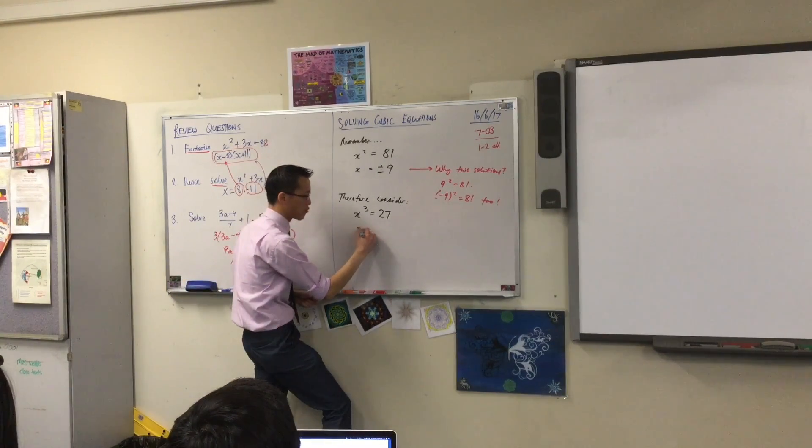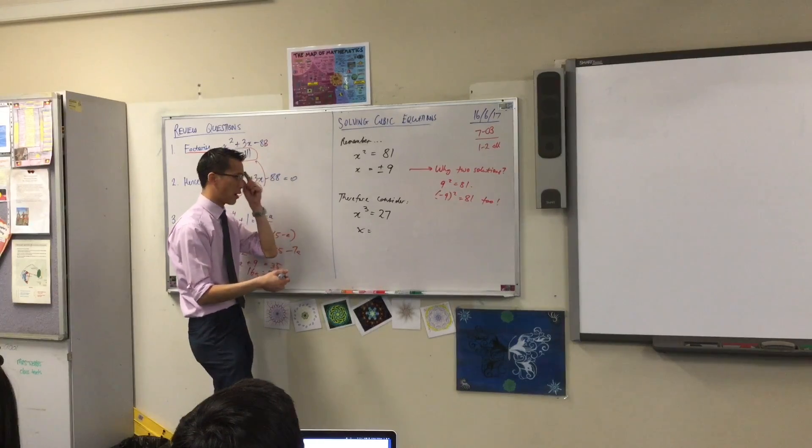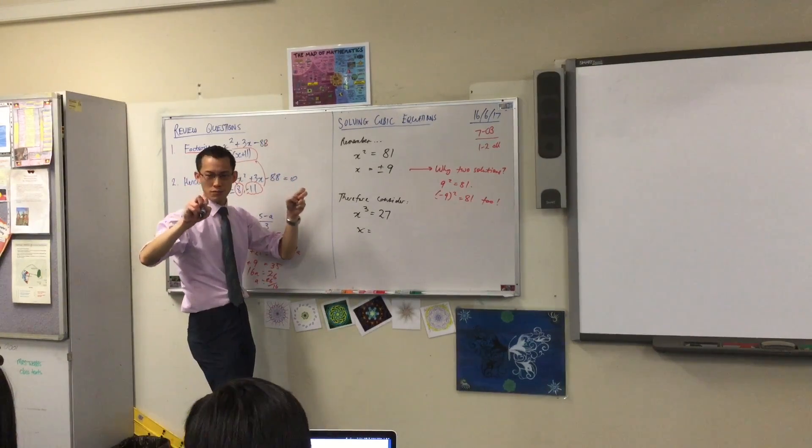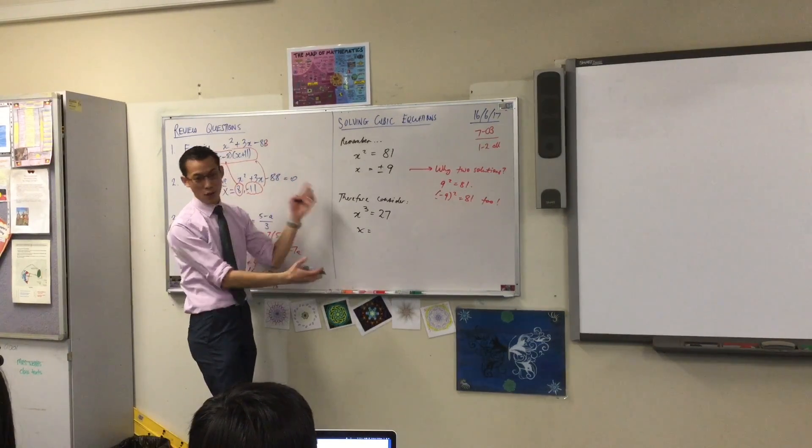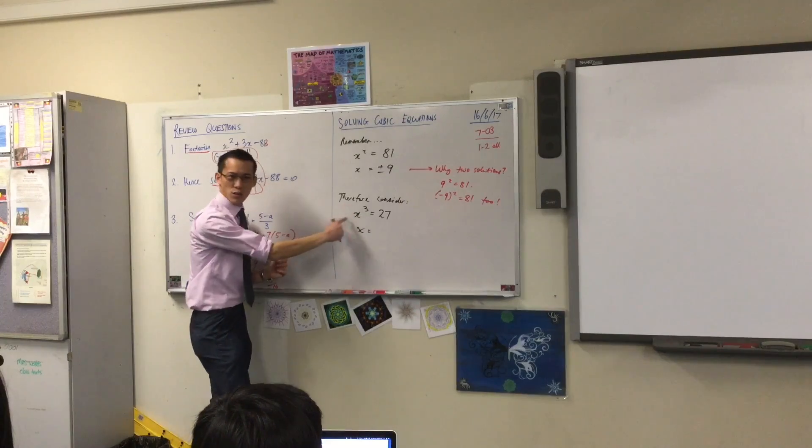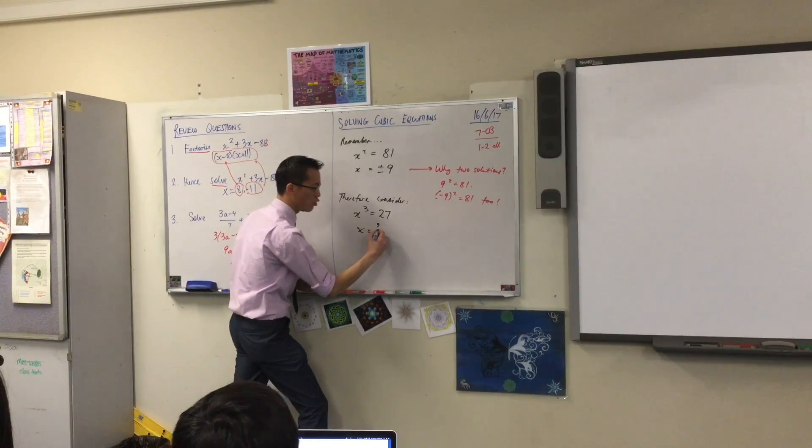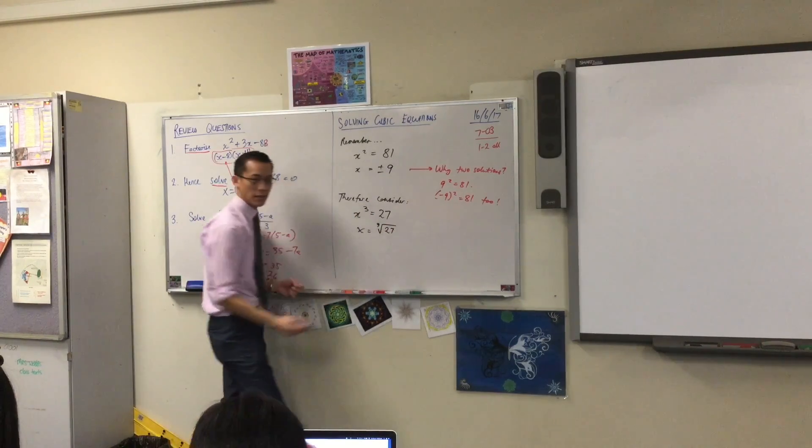Before we write that down, I'd like us to actually write down that operation. To undo, the mathematical word is actually inverse. To undo this cube, I'm going to take the cube root. Like that.